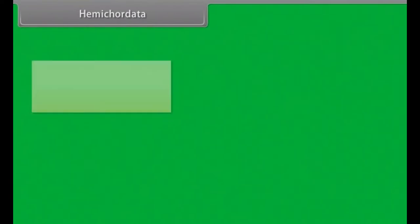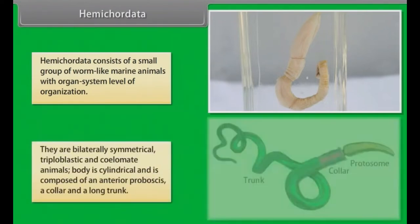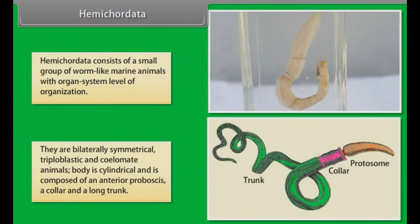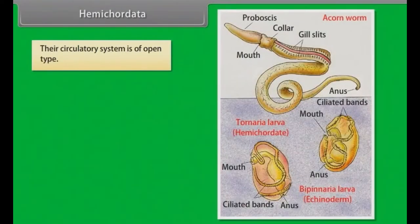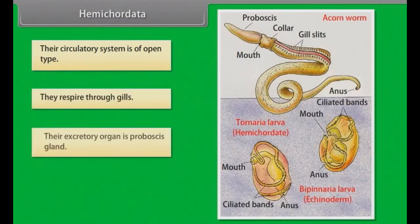Hemichordata consists of a small group of worm-like marine animals with organ system level of organization. They are bilaterally symmetrical, triploblastic and coelomate animals. Body is cylindrical and composed of an anterior proboscis, a collar and a long trunk. Their circulatory system is of open type. They respire through gills.